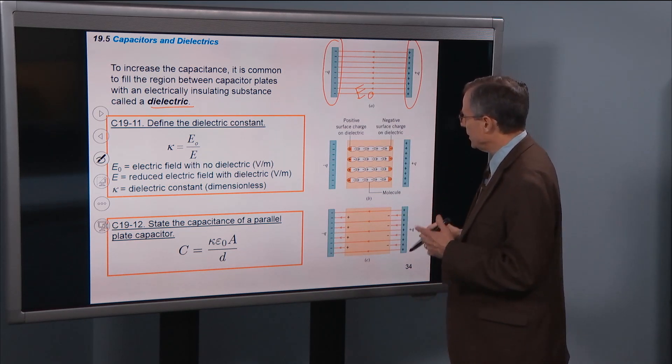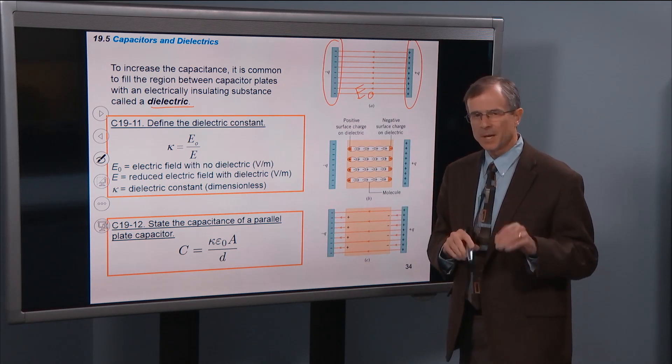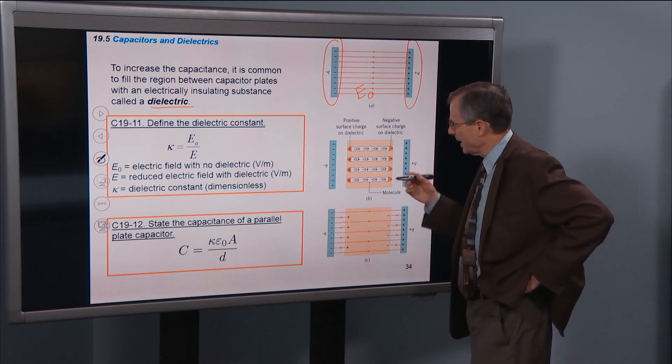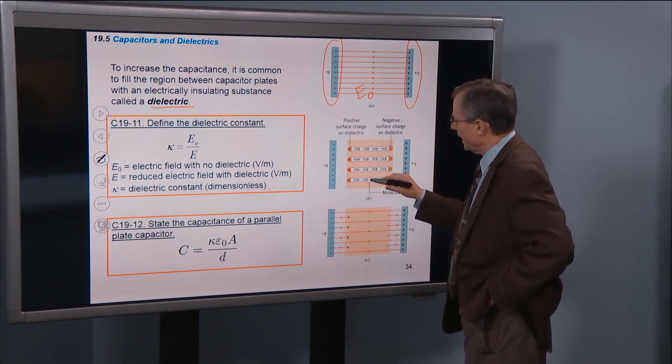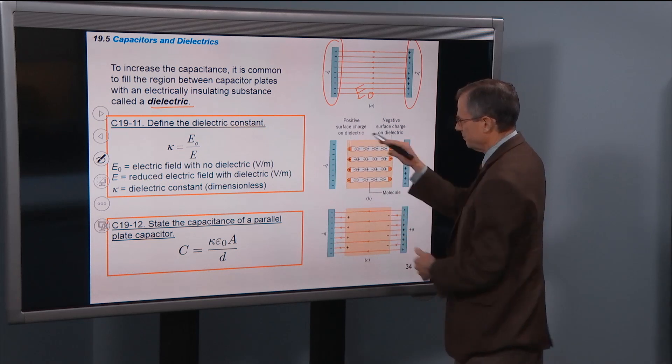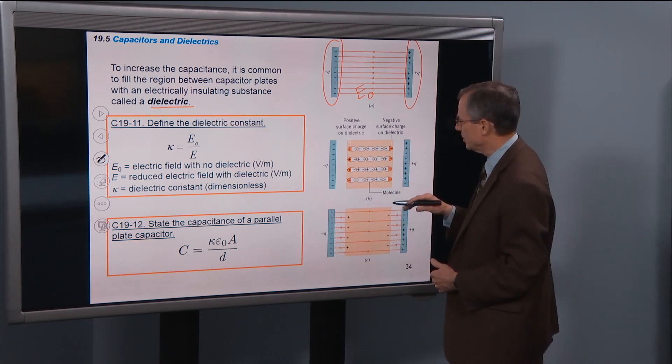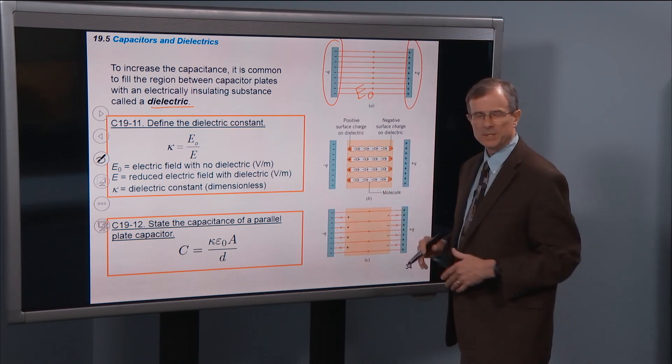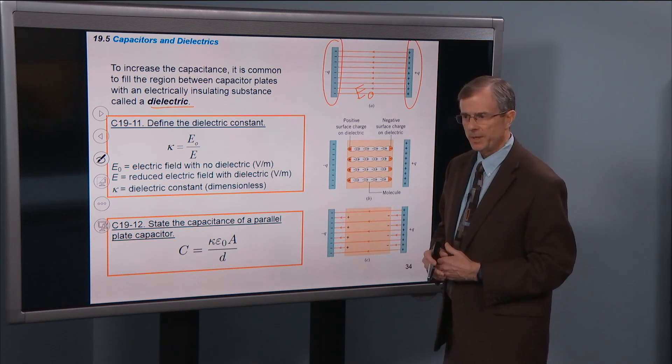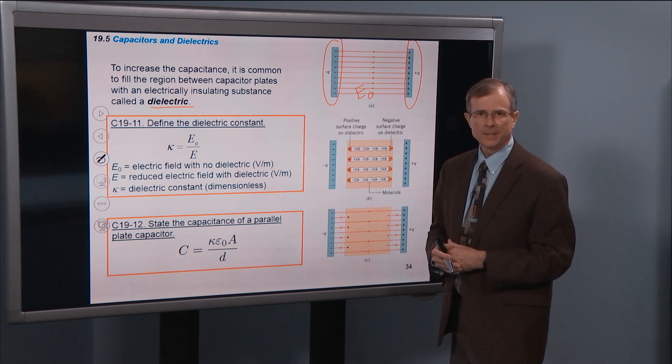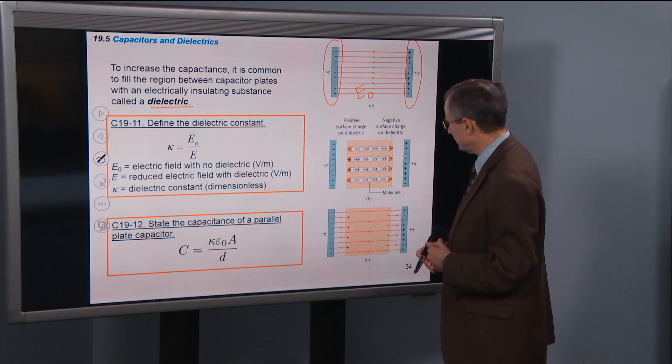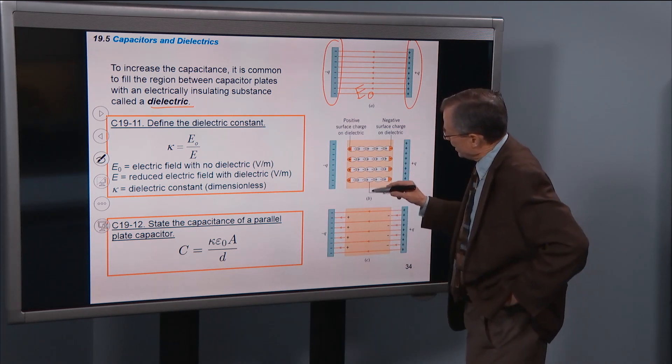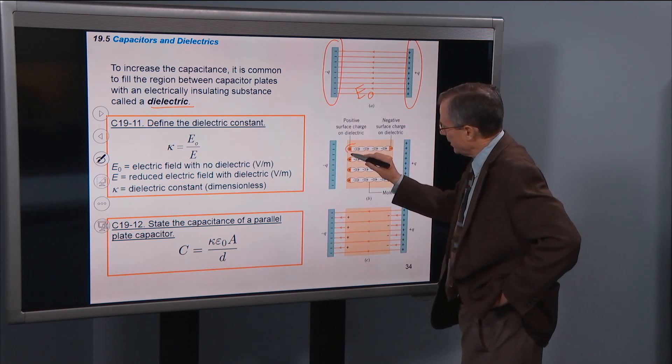And now we insert an insulating material in here. Remember, this is not conducting. And so what happens? If we look at, this tan colored insert here. It's supposed to represent a piece of plastic, or ceramic, is another dielectric material that are used in capacitors. So if we look at a particular atom, that atom has a positive nucleus and electrons that go around the outside.